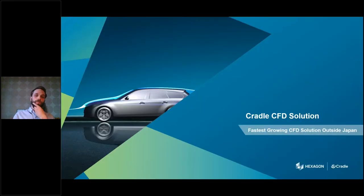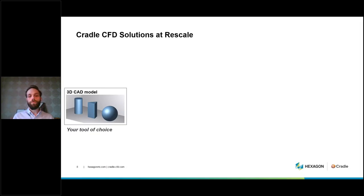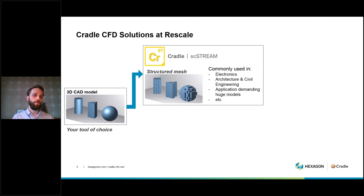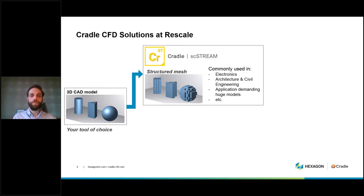So what does the Cradle CFD solution look like? It is built on two main products. The first is SC Stream, which uses a structured mesh approach — representing geometry with voxel-like cubes of different sizes. These don't need to be perfect cubes; they can be skewed, but they are still arranged in a structured way. This approach is very common in the electronics industry, architecture, and civil engineering, and is very effective for handling large models.